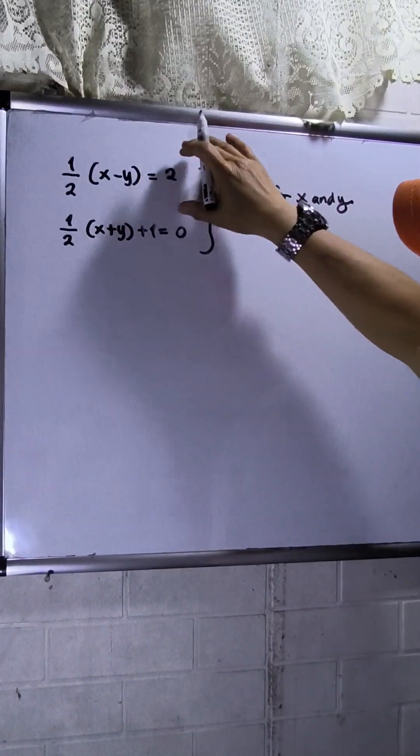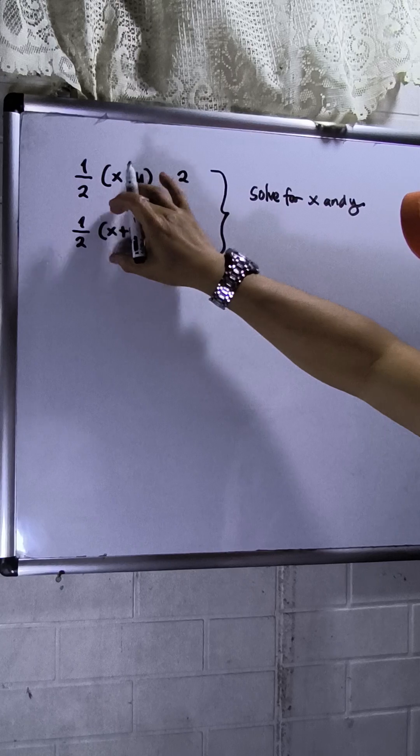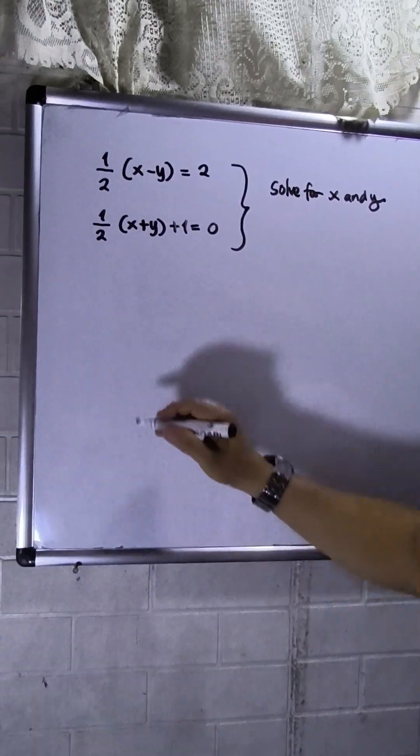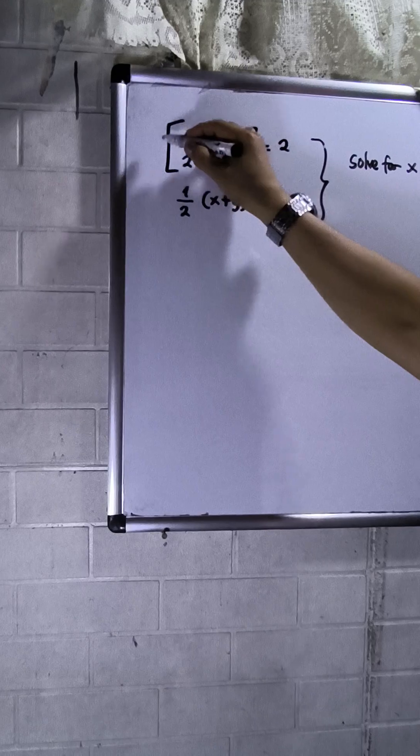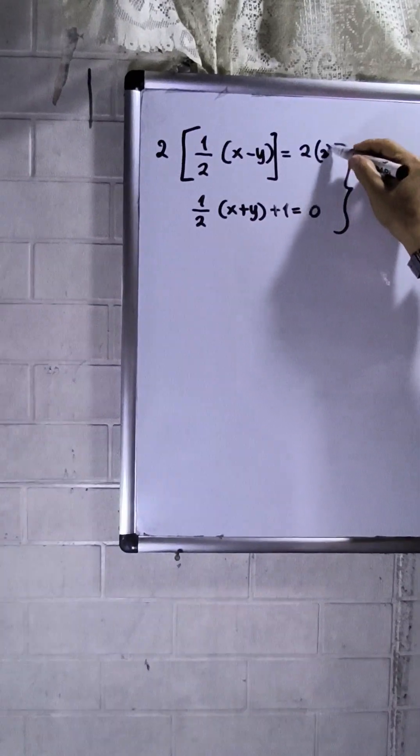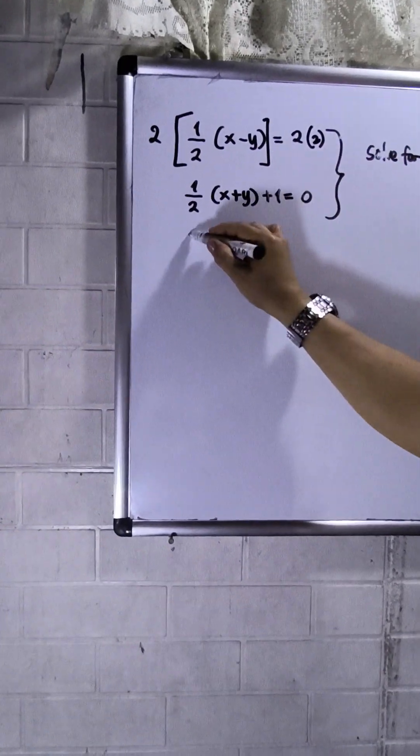So I will simplify this one in a standard linear equation. So this one will be multiply both sides by 2. And then this one will be move out.